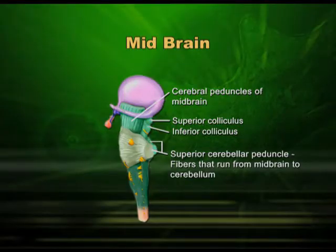The midbrain is located between the hypothalamus and thalamus of the forebrain, and the pons, which is another area in the hindbrain. It is very small in size, but very important because a canal runs through it which continues all the way to the spinal cord. The spinal cord also has a canal running within it, and that is why the midbrain becomes very important.